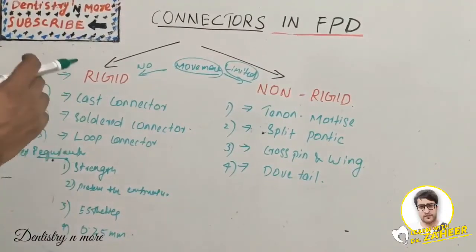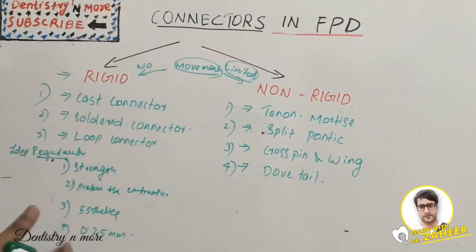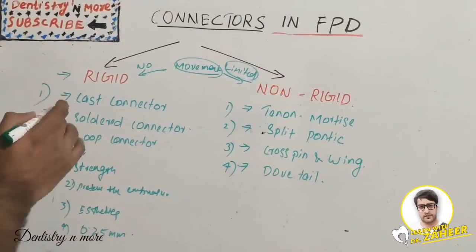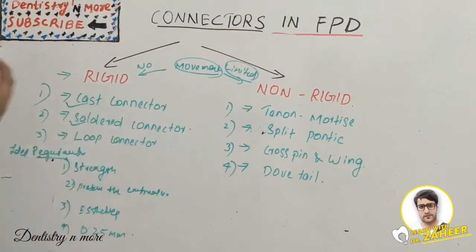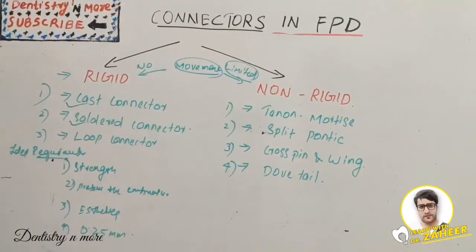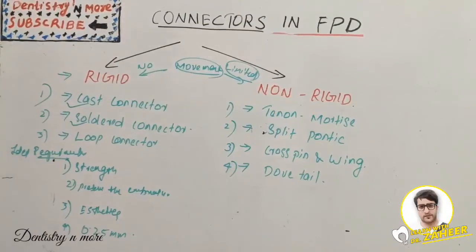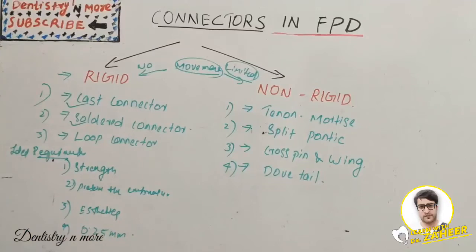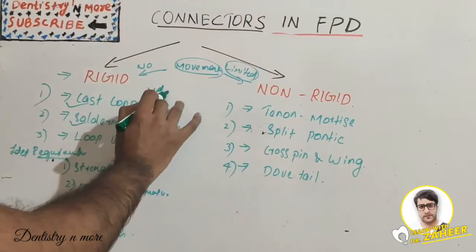Now we start with the rigid connector, which is the most commonly used and is ideal for short-span fixed partial dentures. It can be made by three processes: casting, soldering, or welding. Casting means the molten metal is cast in a full unit die including both pontics and retainer. Soldering uses a separate intermediate metal with a lesser melting temperature than the parent metal to join the two components.